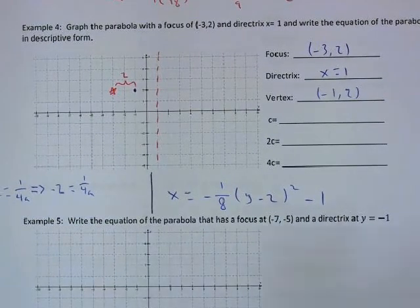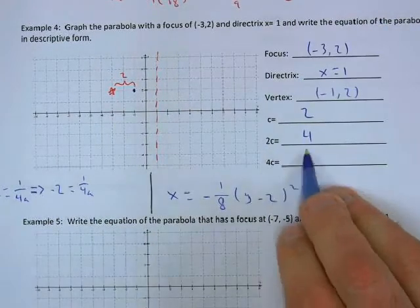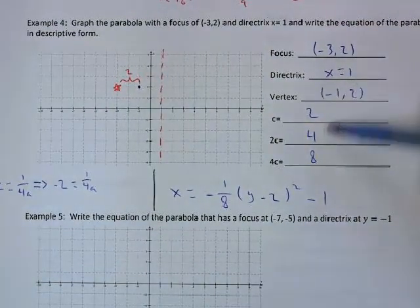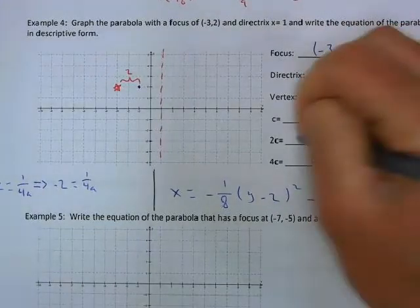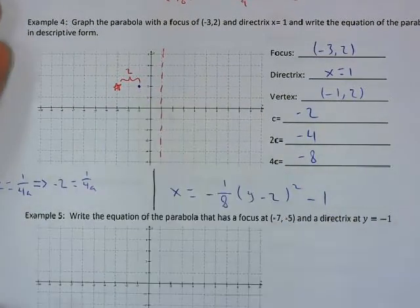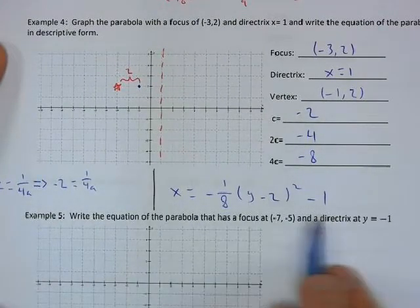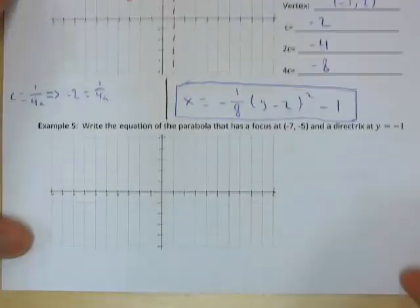Putting it all together, our equation is x = (-1/8)(y - 2)² - 1. That's the answer we wanted — the equation of the parabola in descriptive form. We don't need to worry too much about finishing the sketch since they primarily asked for the equation.